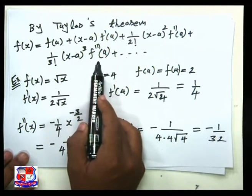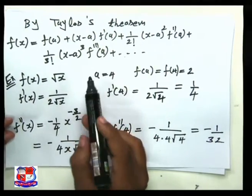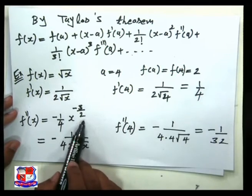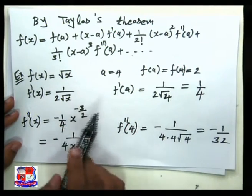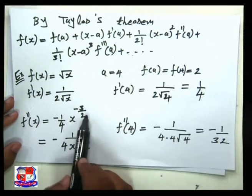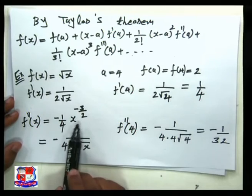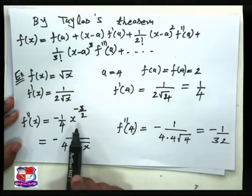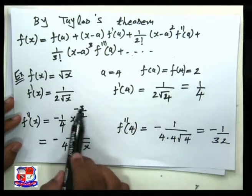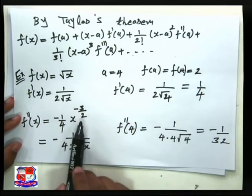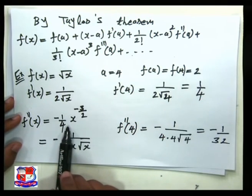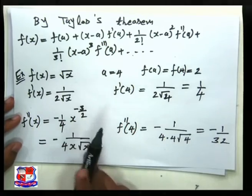To find the third derivative: f''(x) = −(1/4)·x^(−3/2). Differentiating again: the derivative of x^(−3/2) is (−3/2)·x^(−5/2). So f'''(x) = (−1/4)·(−3/2)·x^(−5/2) = (3/8)·x^(−5/2). This gives us the third derivative needed to complete the Taylor polynomial of order 3.